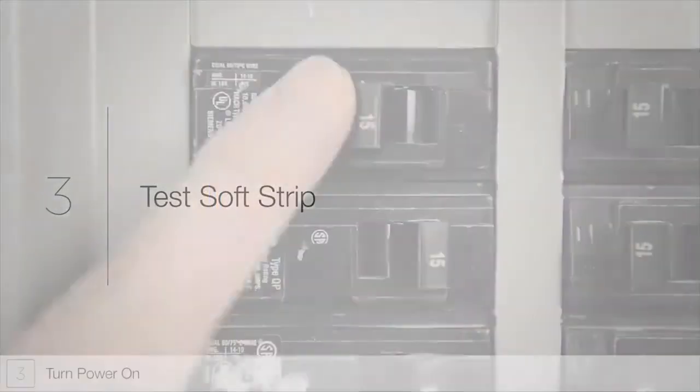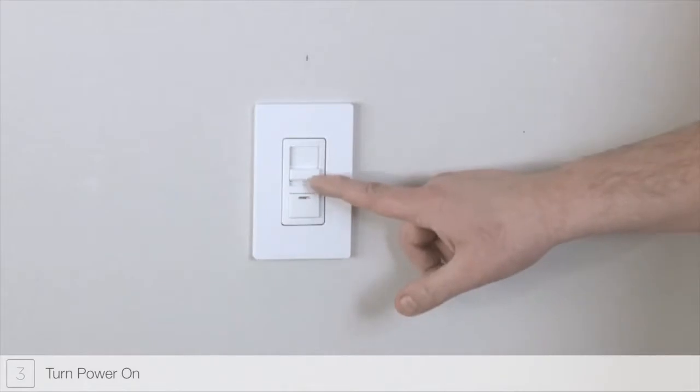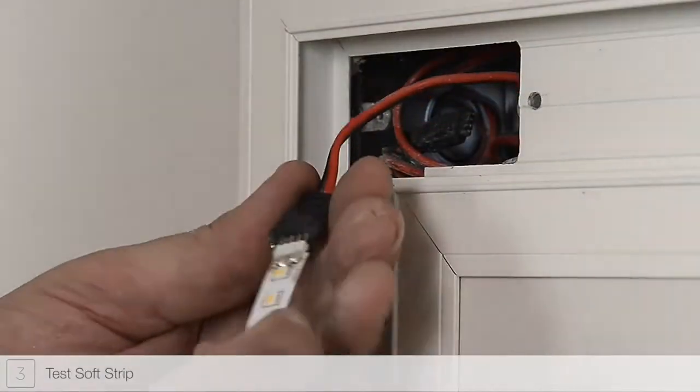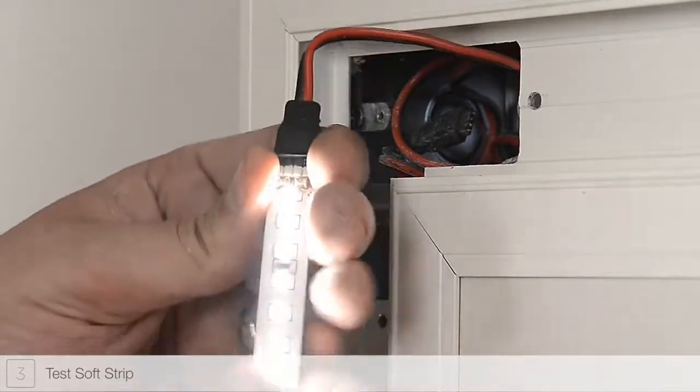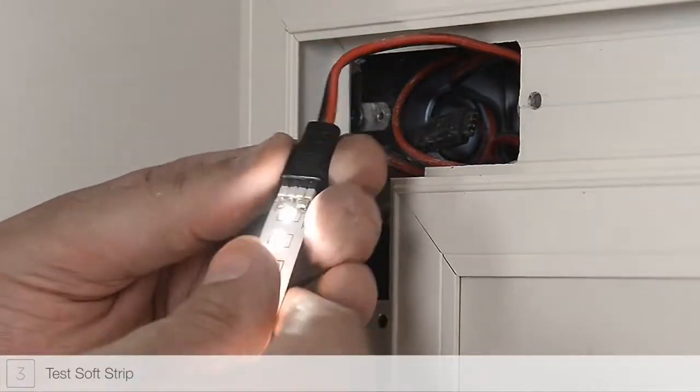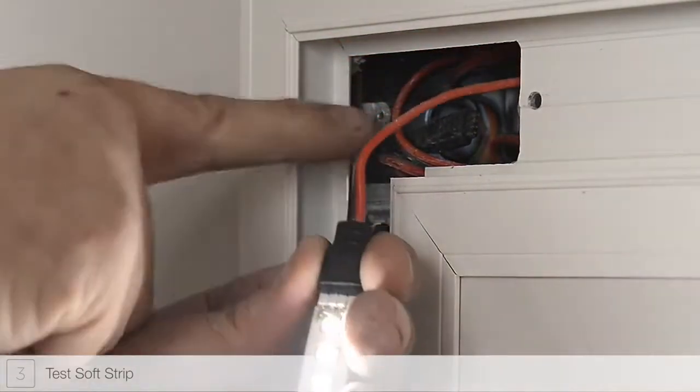Step 3. Restore power to the junction box to test the LED soft strip. When connecting strip to the power feed cable, it is important to align the plus 24 VDC marking on the soft strip with the red wires of the power feed cable.